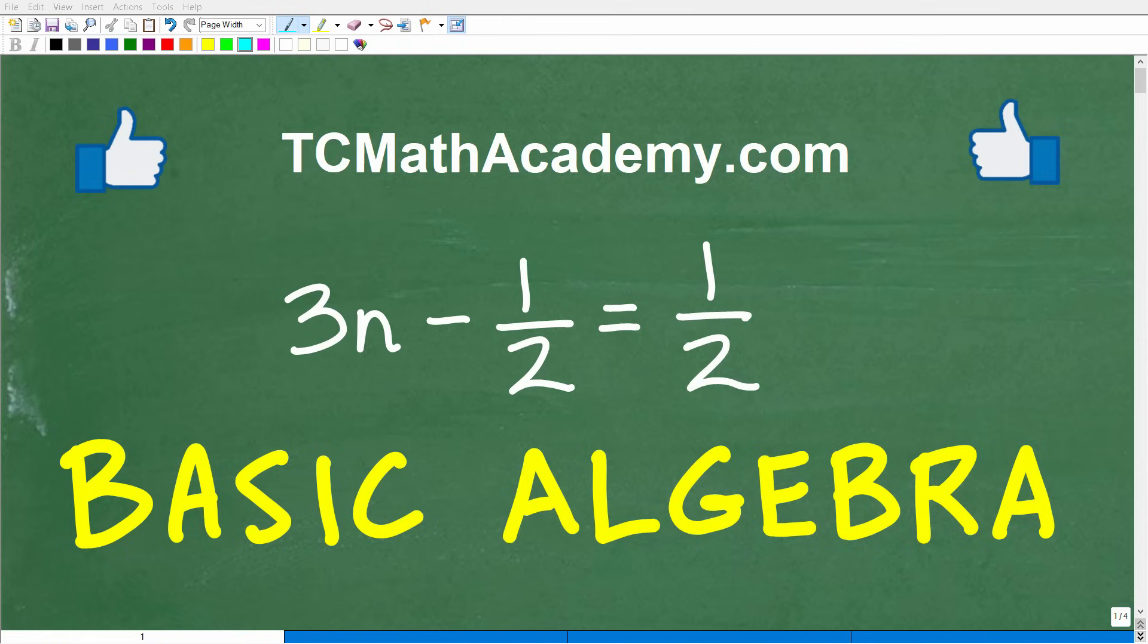Okay, so let's see if you can solve this basic algebraic equation without the aid of a calculator. And the equation is 3n minus 1 half is equal to 1 half. We want to solve for n.